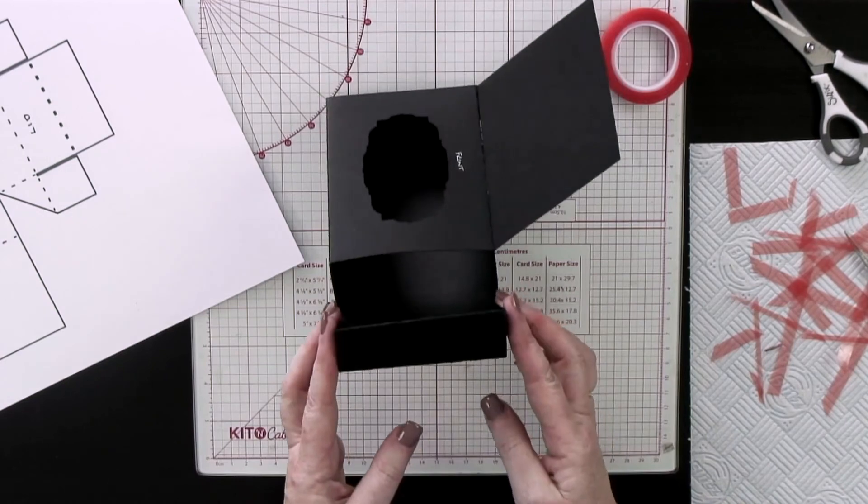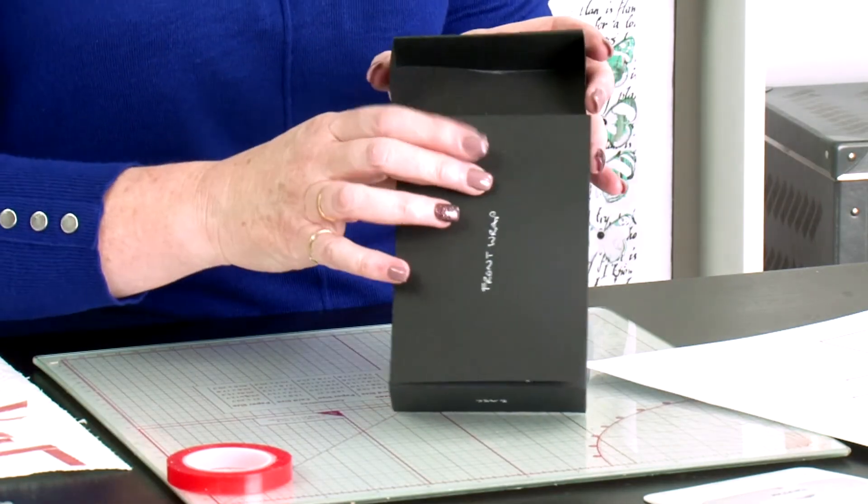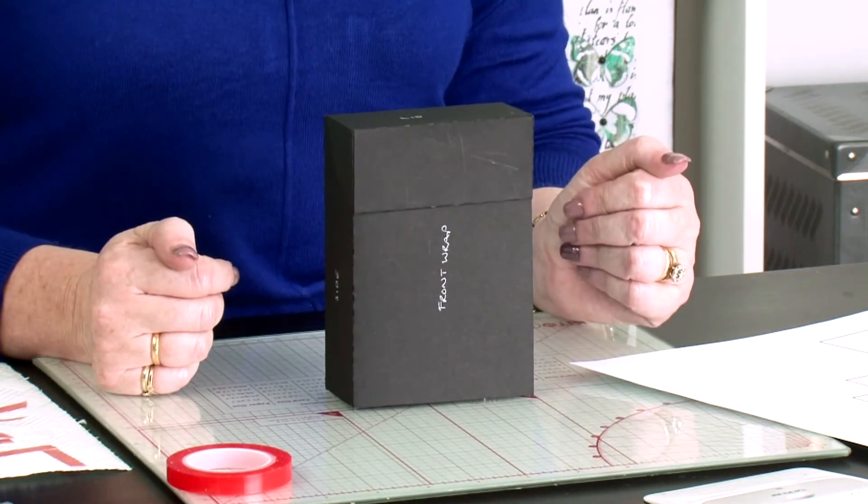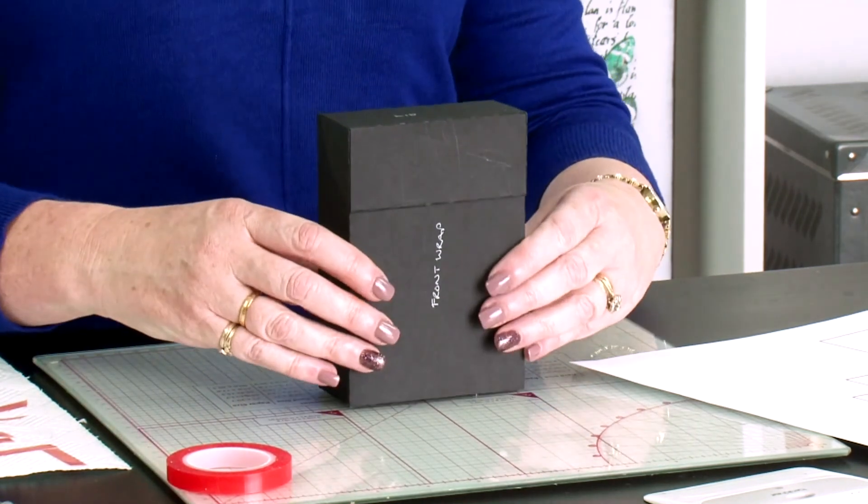We now have our lid. Then we close the front wrap, close the lid over the top, and that's your flip-top box. That's box one. Then you would go ahead and cut all your decorative panels and your pattern panels, but I've taught you all that in the education.